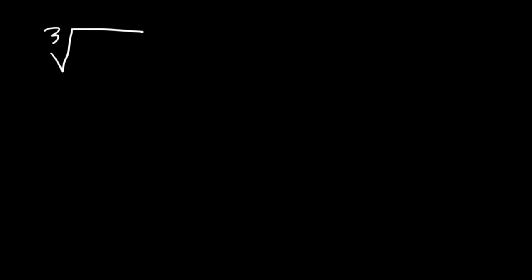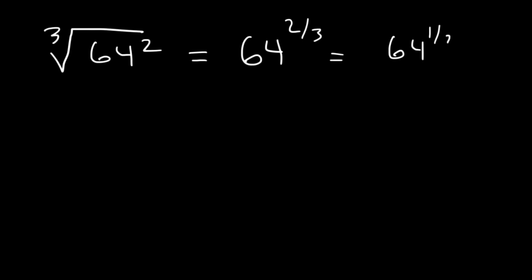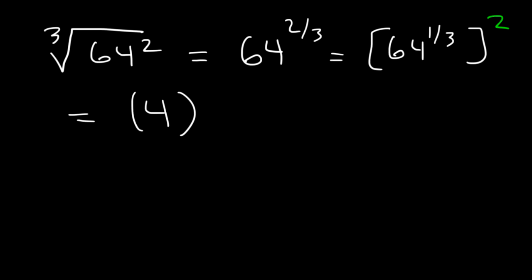What is the cube root of 64 squared? If we have a radical and an exponent on the inside, we can change it into exponential form as a fractional exponent. This is equivalent to 64 raised to the 2/3, which is the cube root of 64 raised to the 2nd power. The cube root of 64 is 4, because 4 times 4 times 4 is 64. So we have 4 squared, and 4 squared is 16. The cube root of 64 squared is simply 16.